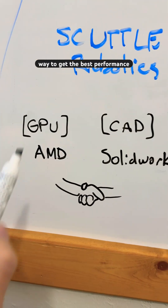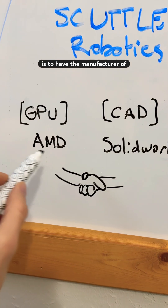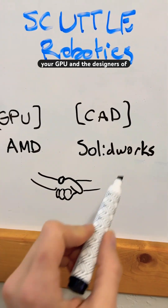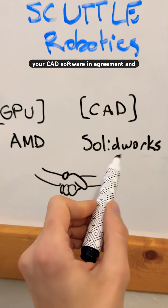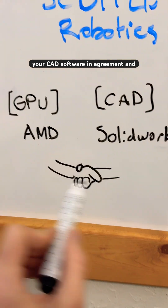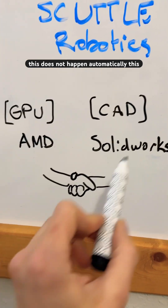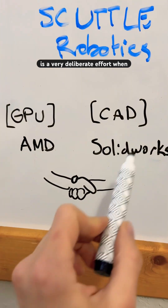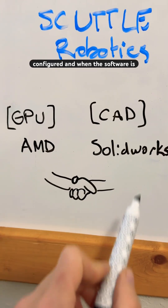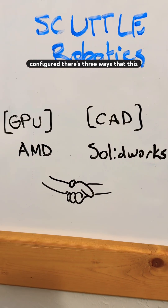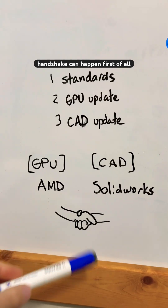The way to get the best performance is to have the manufacturer of your GPU and the designers of your CAD software in agreement. This does not happen automatically — it's a very deliberate effort when the drivers are being built, configured, and when the software is configured. There are three ways that this handshake can happen.